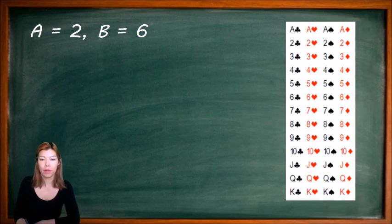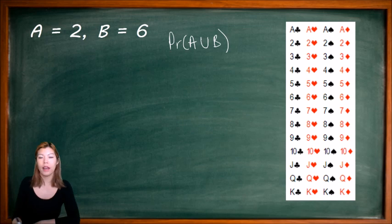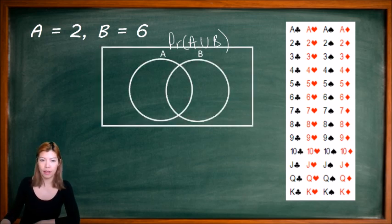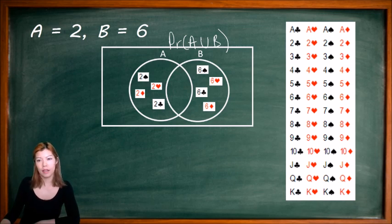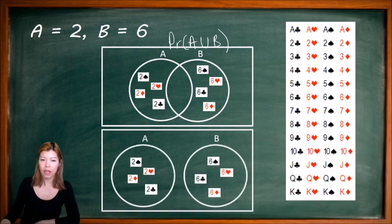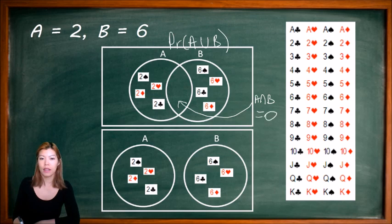Let's say we want to find the probability of picking a 2 or picking a 6. Let's draw a Venn diagram to help us visualize this. If A is picking up a 2 and B is picking up a 6, it looks like we have 8 things that could happen. We could also draw it with nothing in common in the middle — and we call that middle region A intersect B. In this case, there is nothing in the intersection.